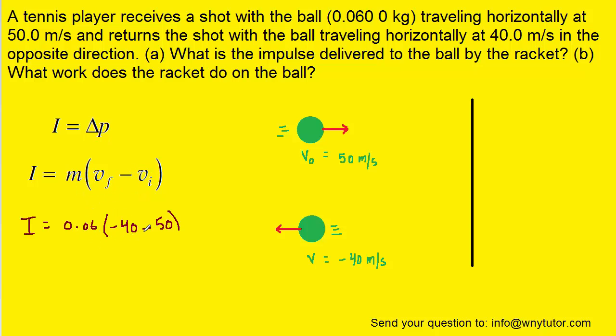So we've plugged in the known values. Notice again the final velocity has a negative sign on it. And when we compute that impulse, we can see it turns out to be negative 5.4, and then the unit is kilograms times meters per second because we're multiplying a mass times a velocity.